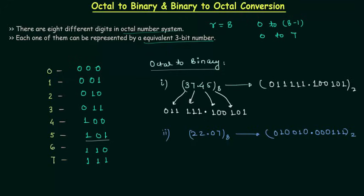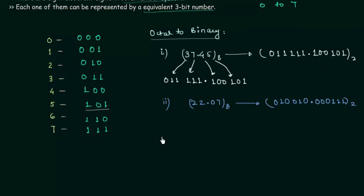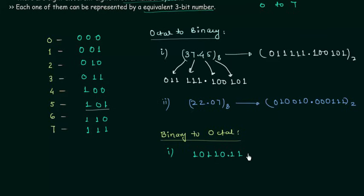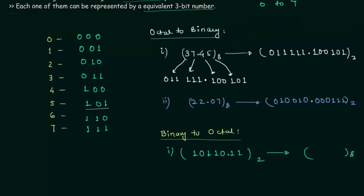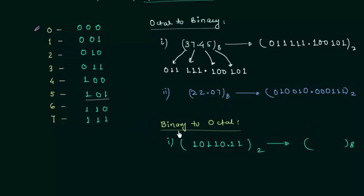Now we will move to binary to octal conversion. The binary number is 101100.110. To convert binary to octal, we make groups of 3 bits. First we locate the binary point. For the integer part we move from right to left, and for the fractional part we move from left to right.